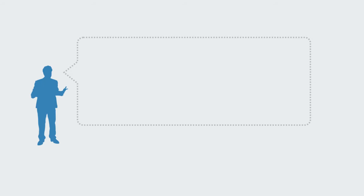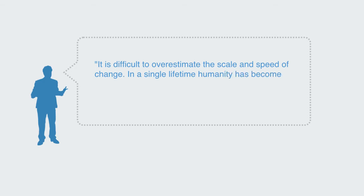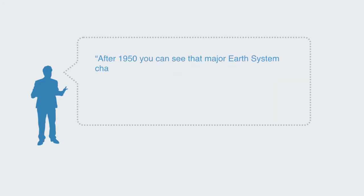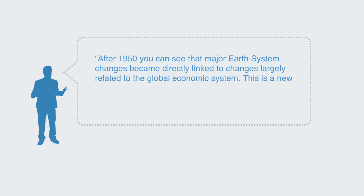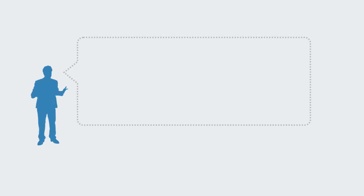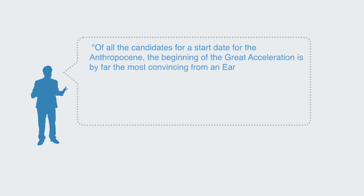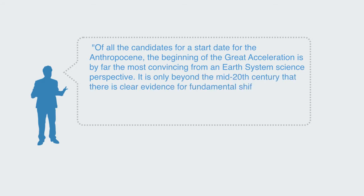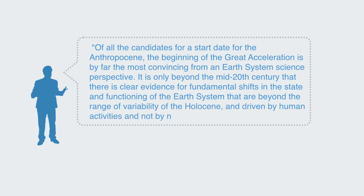Professor Will Steffen, the lead author on the project, stated: 'It is difficult to overestimate the scale and speed of change — in a single lifetime, humanity has become a planetary-scale geological force.' He added that after 1950, major Earth systems changes become directly linked to changes in the global economic system. The paper argues that of all candidates for the Anthropocene's start date, the beginning of the Great Acceleration is by far the most convincing from an Earth system science perspective, as it is only beyond the mid-20th century that there is clear evidence for fundamental shifts in the state and functionality of the Earth system beyond the range of Holocene variability.